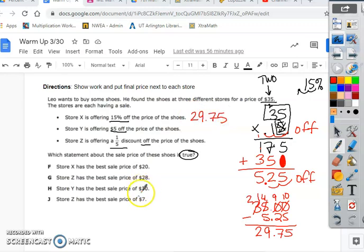So, none of them here say $29.75. And it says store X has the best sale price of $20. Well, that's not the sale price, so that cannot be correct.